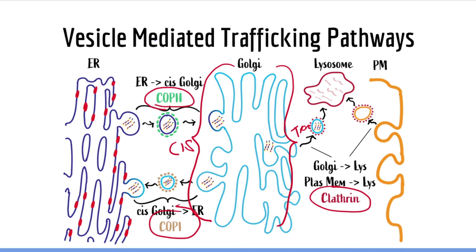Proteins made in the endoplasmic reticulum utilize vesicles for transport and can go to the Golgi, endoplasmic reticulum, lysosome, or plasma membrane. Vesicle-mediated trafficking involves the help of proteins called COP1, COP2, and clathrin. I-cell disease is caused by loss of the lysosomal targeting molecule phosphorylated mannose. Non-vesicular mediated trafficking requires amino acid sequences called localization sequences to target the protein to its destination. These proteins never enter vesicles and normally stay inside the cell.